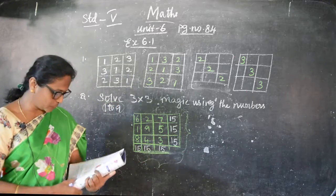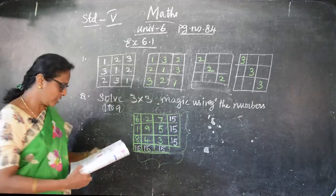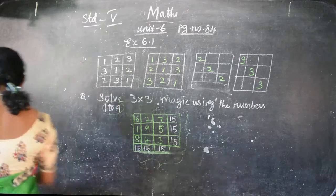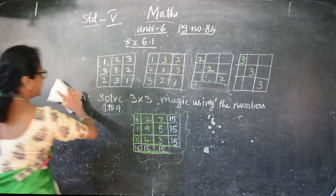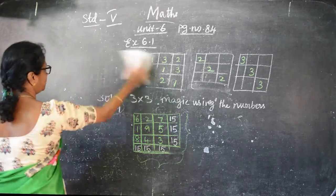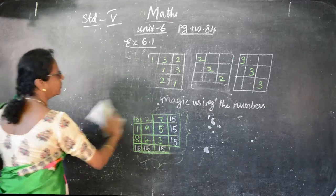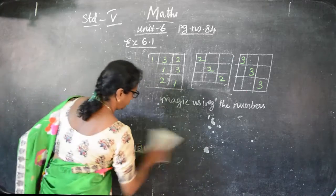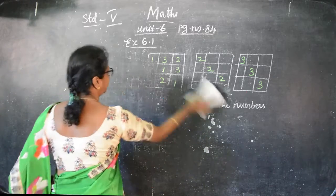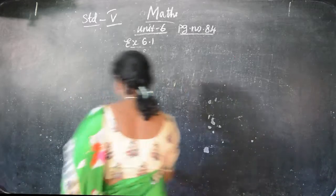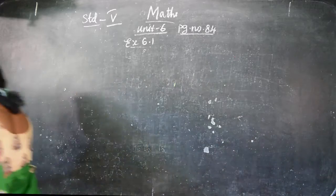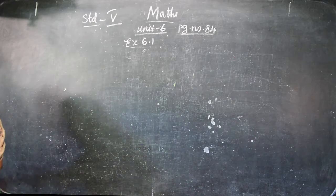Now complete the following - grade 4 into 4. We have done the 3 into 3, now we are going to do the 4 into 4 square. I will give it as homework, you can practice, children.